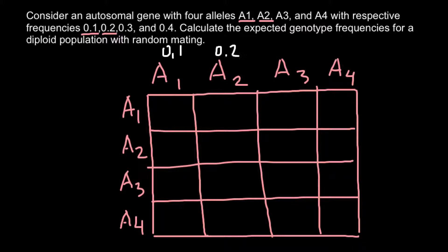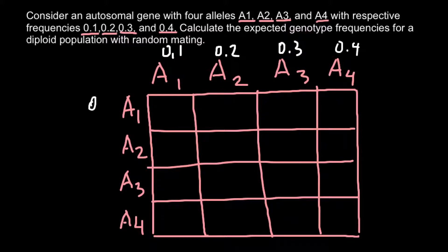Frequency of the A3 allele would be 0.3, so 0.3 here. And frequency of the A4 allele is 0.4. The same frequencies we list for the alleles on the side: 0.1, 0.2, 0.3, and 0.4.